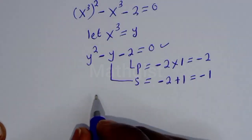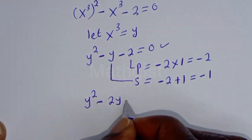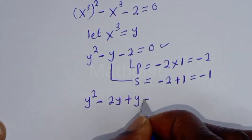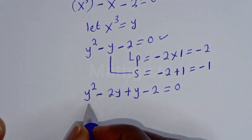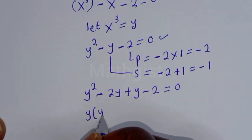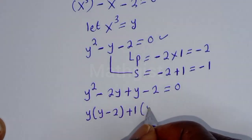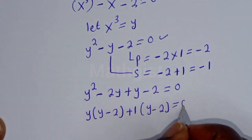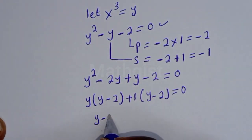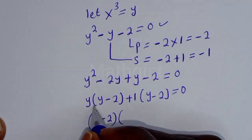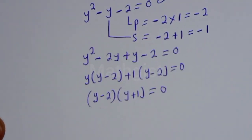Substituting: y squared minus 2y plus y minus 2 is equal to 0. y is common here — y bracket y minus 2, plus 1 bracket y minus 2 is equal to 0. Then y minus 2 is common, giving y minus 2 bracket y plus 1 is equal to 0. There are two cases here.